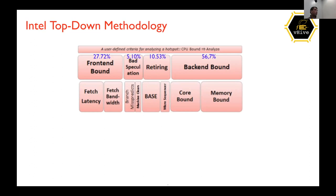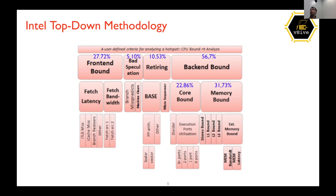You run the PMU tool and get numbers like this. Then you go to level three, level four, and so on. There are several categories worth explaining. 'Fetch latency' tells you if there is overhead in instruction fetching. 'Fetch bandwidth' means there is some overhead in instruction decoding. For 'bad speculation,' you can have either bad branch prediction — meaning branch prediction is not performing well — or bad data speculation. In both cases, the instruction will not be retired.